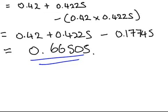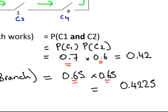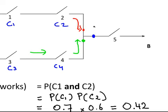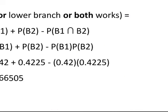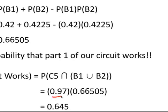So the probability of the current reaching just before circuit 5 is 0.66505. Now, the probability that circuit C5 is closed is 0.97. So the probability of getting from that point X through to B is 0.97. Since these are independent, we simply multiply: 0.97 times 0.66505, giving a final answer of approximately 0.645.